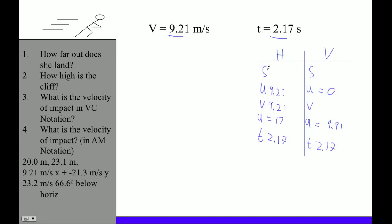On this side, for this guy, all you have to do is, the only formula we're ever going to use is S equals UT. And it really is plus one-half AT squared, but A is zero, so it's just S equals UT. So S is going to be 9.21, that's our velocity, times 2.17. So 9.21 times 2.17, that's 19.9857.